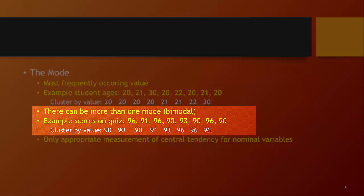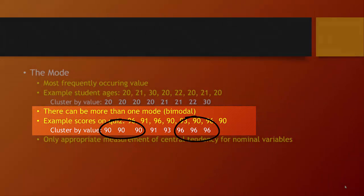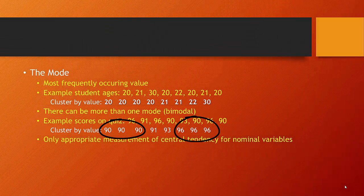It's also possible to have bimodal distributions, where you have the same number of observations being the maximum number within any one category. For example, quiz scores of 96, 91, 96, 90, 93, 90, 96, and 90 — when sorted, you have three observations of 90, one of 91, one of 93, and three observations of 96. The fact that both 90 and 96 tie for the greatest frequency means you have a bimodal distribution.